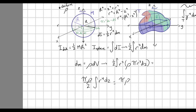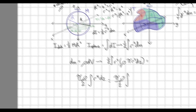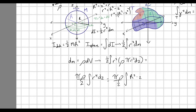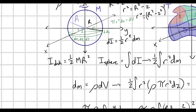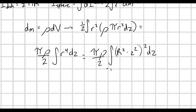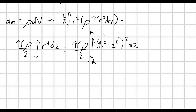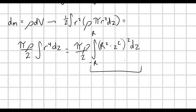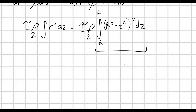Let's make that substitution. I need r to the fourth, which is just this entire quantity r² = (R² − z²) squared. So we have (πρ/2) times the integral of (R² − z²)² dz. Now, what are the boundaries? We're integrating with respect to z, which ranges from minus R at the bottom to positive R at the top of the sphere. So the boundaries go from −R to R.